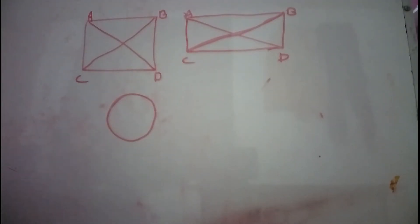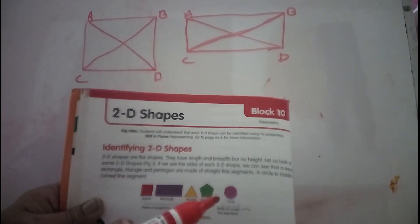Hello students, it's Grade 4 Block 10. In your maths textbook on page number 46, the topic is 2D shapes.